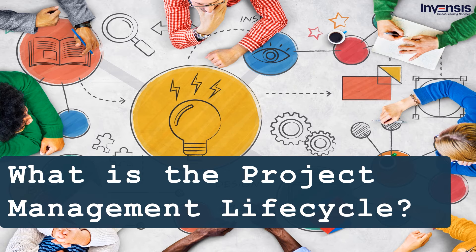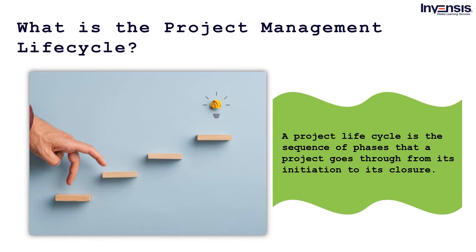A project life cycle is the sequence of phases that a project goes through from its initiation to its closure. The number and sequence of the cycle are determined by management and various other factors like the needs of the organization involved in the project and the nature of the project and its area of application. The phases have a definite start, end, and control point, and are constrained by time.